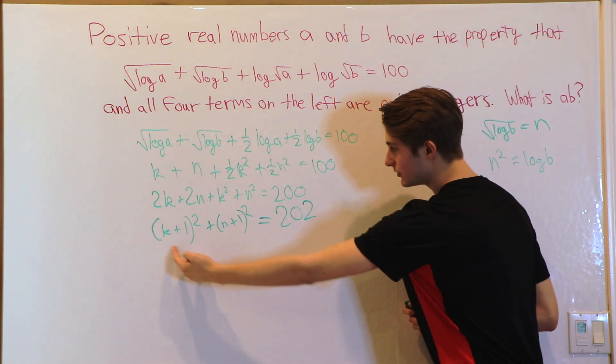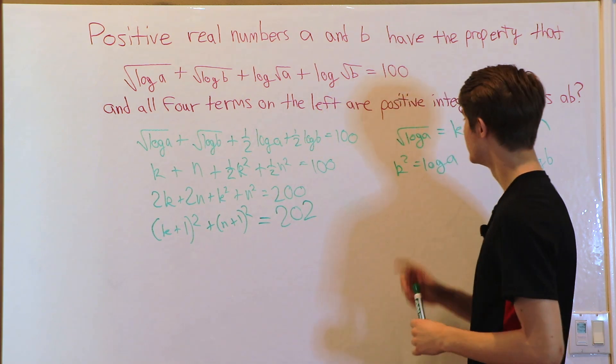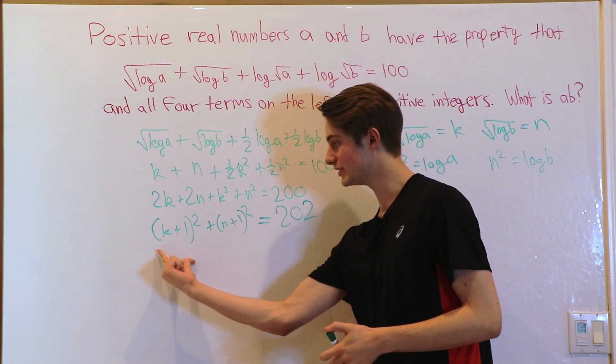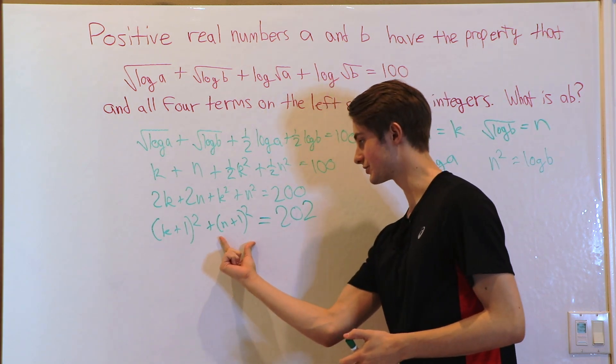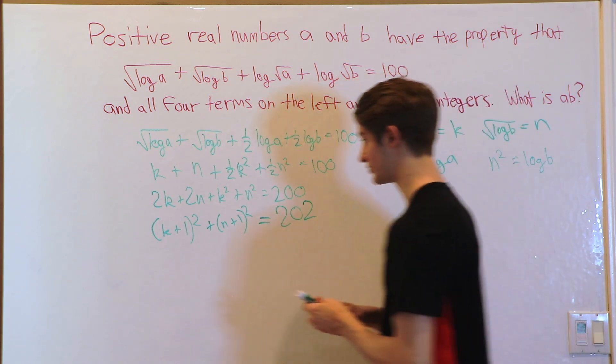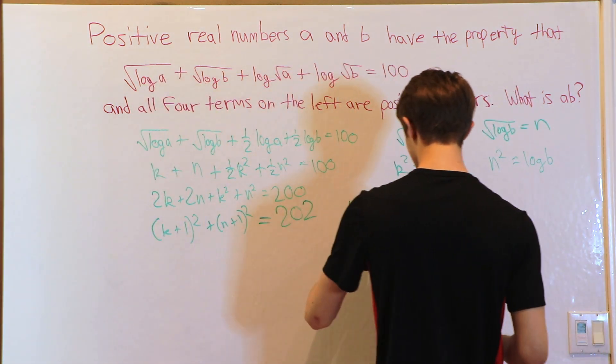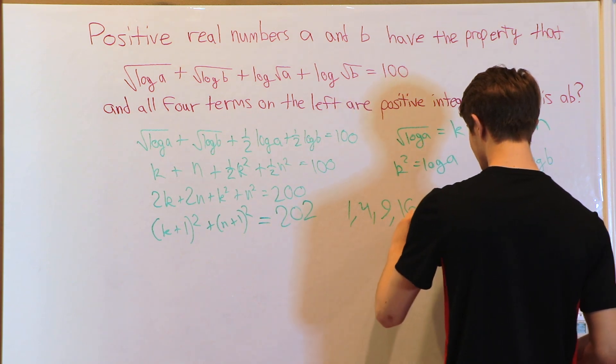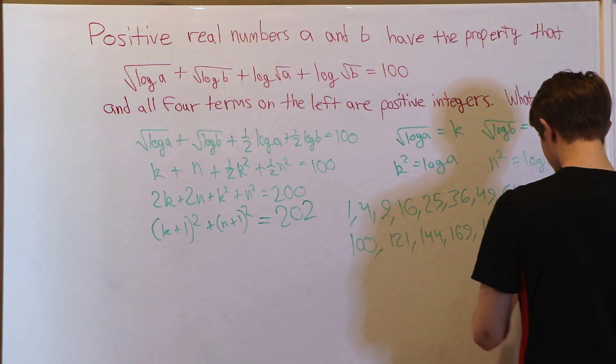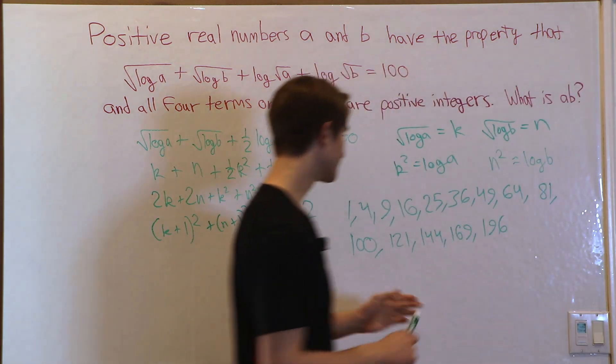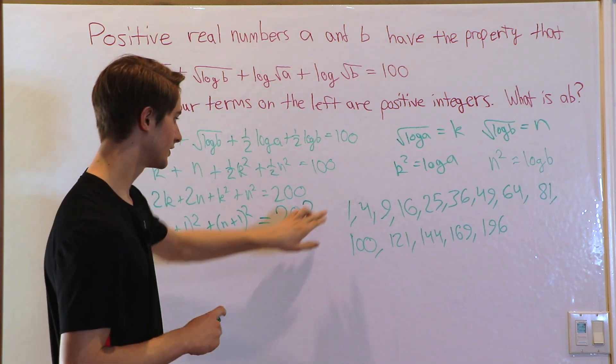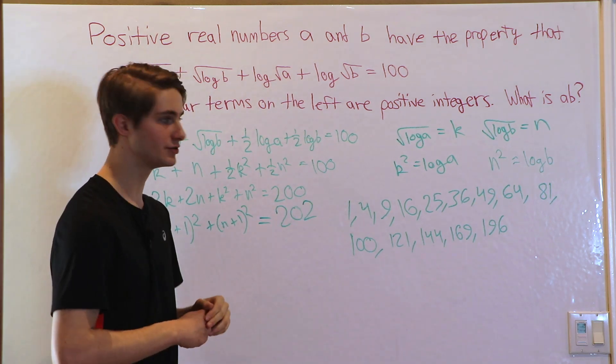And now we have an equation that we know how to solve. Because we know all of the terms on the left, this K and this N are both positive integers. So we know this is an integer squared. This is an integer squared. They add to 202. So let's list out some of the squares. 1, 4, 9, 16, 25, 36, 49, 64, 81, 100, 121, 144, 169, and 196. These are all of the perfect squares that are less than 202.